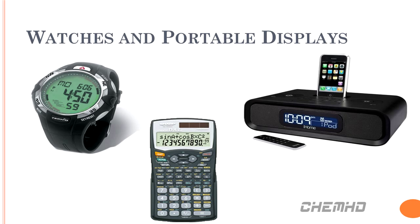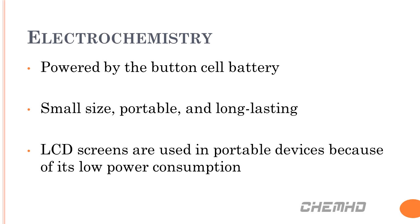Now we are going to talk about watches and portable displays. You're probably wondering why these items are a part of this LCD and plasma topic. Well, watches and other portable displays use LCD screens. Watches are powered by the button cell battery because of its small size and it is long-lasting. Also, LCD screens are used because of their low power consumption, so a battery is able to support it.